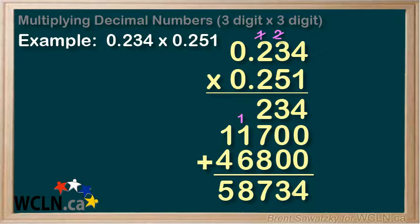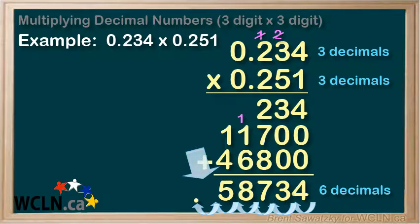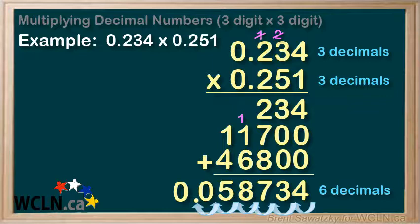Now where does the decimal go? Again, we count the total number of decimals involved in the numbers that we're multiplying. There are three decimals in the first number and three decimals in the second number, so we need to have three plus three, or six decimals in our final answer. So counting out our decimal places: one, two, three, four, five, and we'll jump one extra space to get six. In our last jump position here we have to put a placeholder zero, and we could also add a zero at the beginning to ensure that the decimal is noticed. So our final answer here is 0.058734.